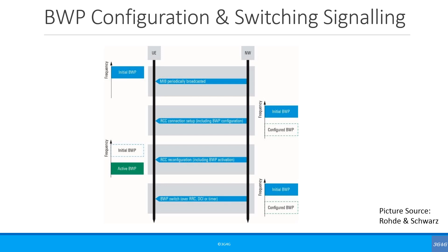As far as signaling is concerned, all UEs have to be able to read the system information, so an initial bandwidth part is configured to allow all UEs on the cell to read the specs. In the case of EN-DC or Option 3, the bandwidth part information has to be explicitly configured in the RRC Connection Reconfiguration procedure — during RRC Connection Setup, which applies to all scenarios where New Radio is the master, or RRC Connection Reconfiguration, which applies to all scenarios where New Radio is the secondary node. Up to four bandwidth parts can be configured in the UE.